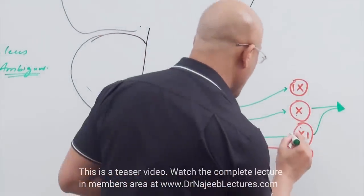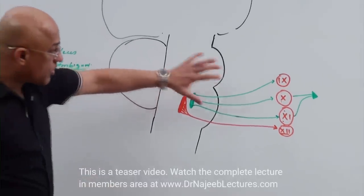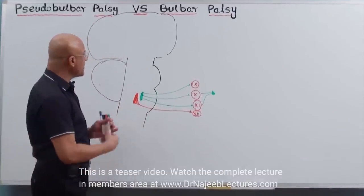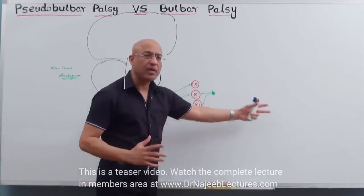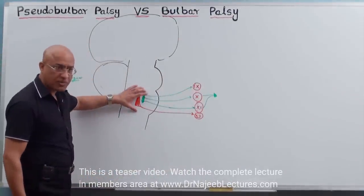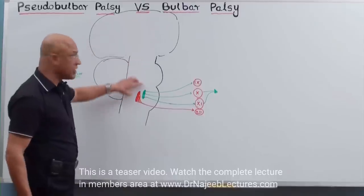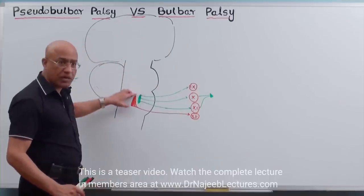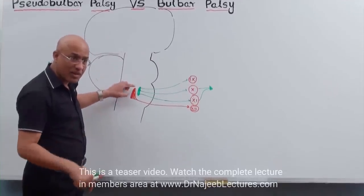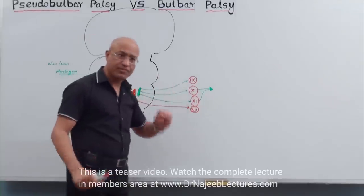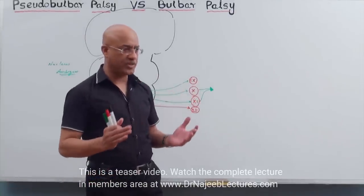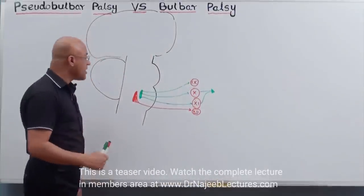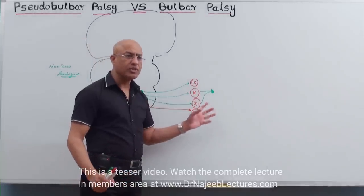This is called the bulbar motor outflow. Now we have to see what structures and muscles this bulbar motor outflow is supplying. Because once this motor outflow is disturbed — either disturbed itself, or its upper motor neuron control is disturbed — the muscles innervated by the bulbar nerves will dysfunction and will not function properly.